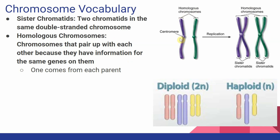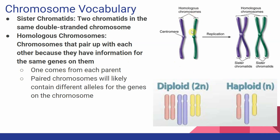We get one of our homologous chromosomes in each pair from each parent. So for example, this purple chromosome could come from one parent, and this green chromosome is going to come from the other parent. Importantly, these paired chromosomes will likely contain different alleles for the genes on that chromosome. They contain the same genes, but the chromosomes in homologous pairs are not going to be genetically identical.